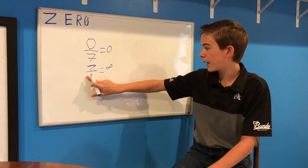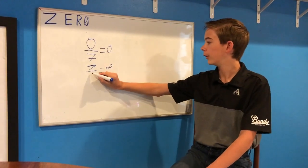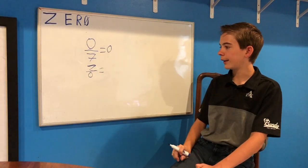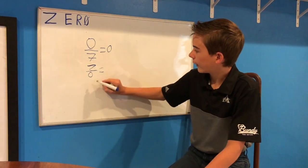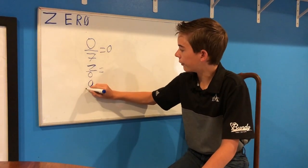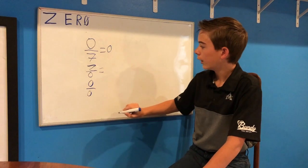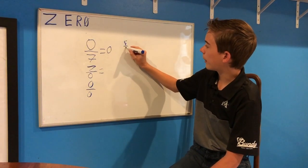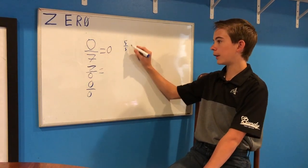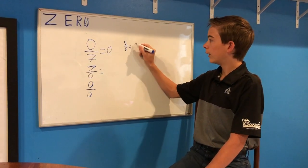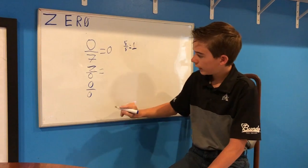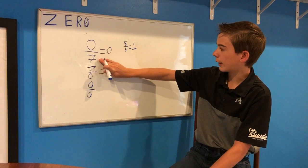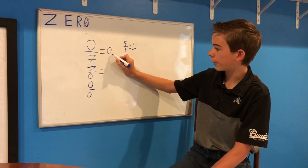However, once you make that jump from the infinitesimal to truly nothing, you're left with an undefined answer. And even more weird than this is zero divided by zero. If you have any other fraction — for example five divided by five, or any number divided by itself — it equals one. However, with zero divided by zero, you have nothing over something, which should equal zero.